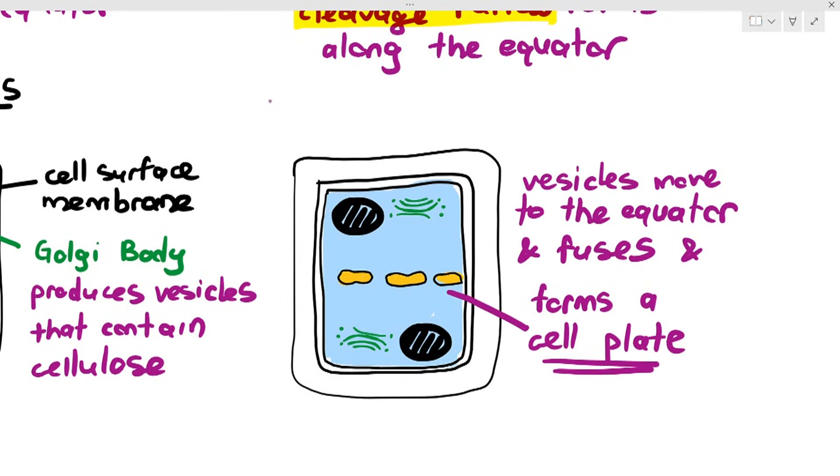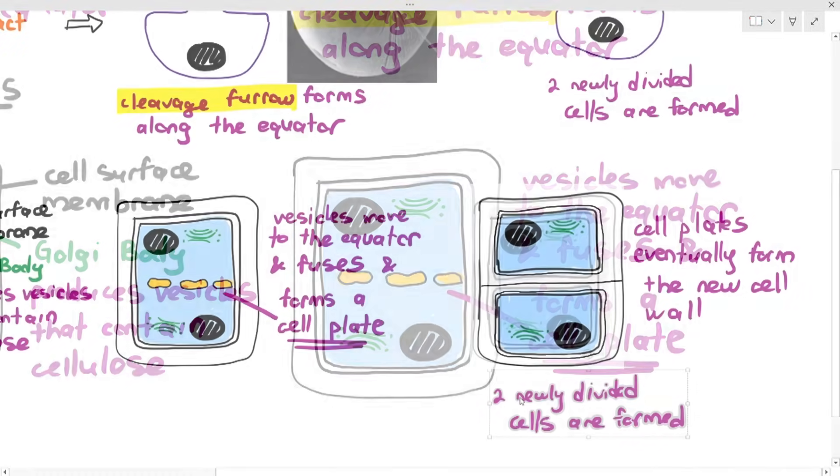The cell plate is the young cell wall. Inside the vesicles, they contain the cellulose. In chapter 2 revision, I told you that cellulose is the polysaccharide required to build plant cell wall. So more cellulose will start gathering at the equator. When more cell wall gathers at the equator, the cell plate becomes bigger and eventually matures.